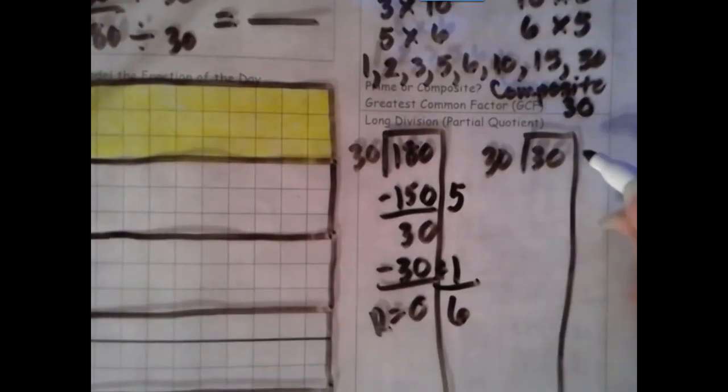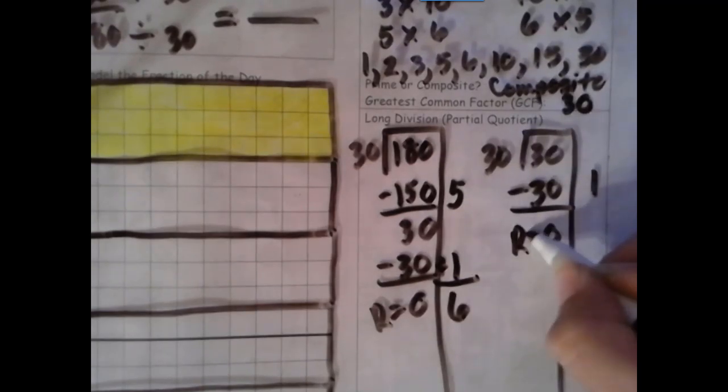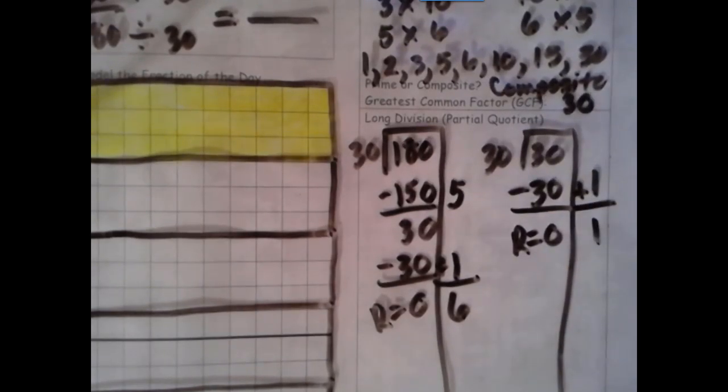Then here, 1 times 30 is 30. Number is the same. Zero is the game. And I get 1.